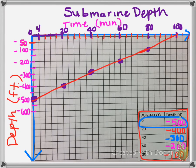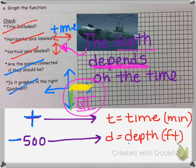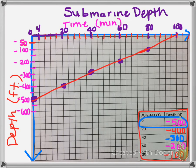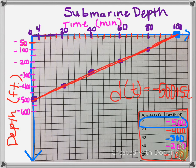Our graph is correct — it's in quadrant four with positive time and negative depth. Going back, the horizontal intercept we algebraically found was at 100 minutes. On the graph, if we extend the line it reaches zero at T equals 100, which confirms the submarine reaches the surface. Our equation was linear, so it makes a straight line, which it does.